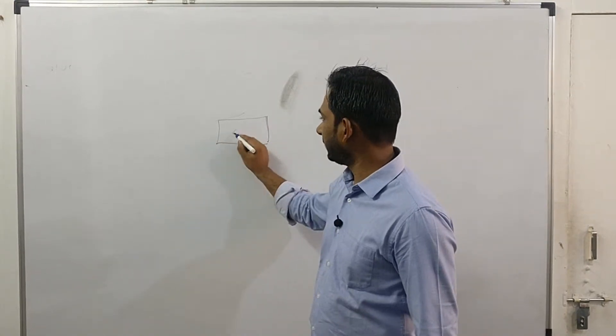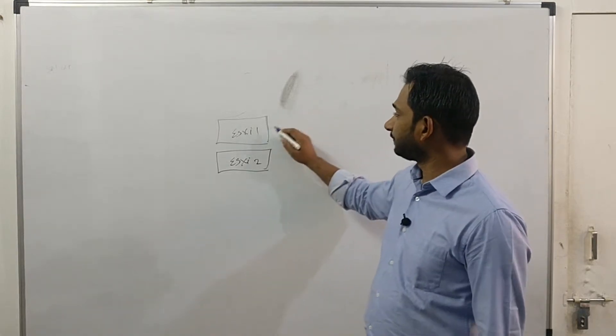vMotion is nothing but virtual machine migration between one ESXi host to another ESXi host. Let me help you with the diagram. So let's assume this is my ESXi1 and ESXi2. This term will be exactly same as it is if you go in any VMware version whether it is 3.5 or 6.7. So you have this ESXi1 and ESXi2.